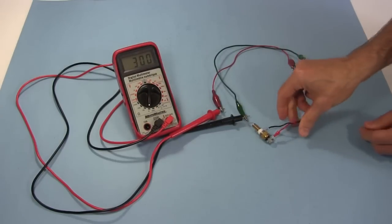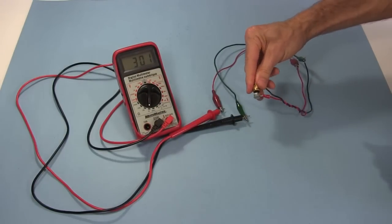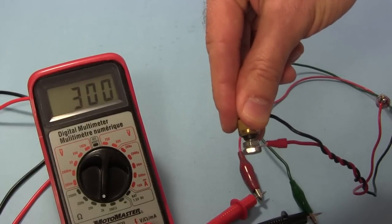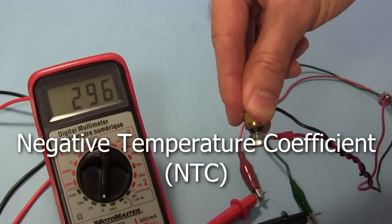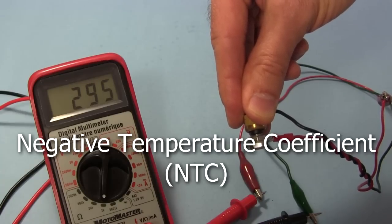Remember, the resistance changes with the temperature. I put my fingers on the probe part, and it started to heat up. Sure enough, the resistance on the meter started to decrease as the temperature increased. So it contains an NTC, or a negative temperature coefficient thermistor.